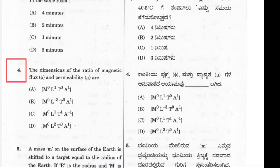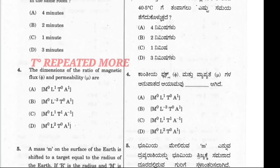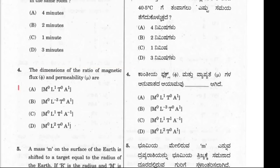In this question, the probability of the correct option being option A or option C — both are having a similar start. Now to decide the correct answer, we take the help of other options. T to the power 0 is repeated more than T to the power 1, so this supports option A. Therefore our correct answer will be option A.